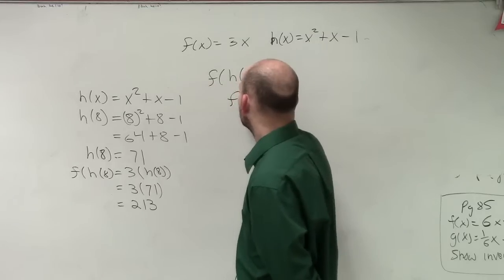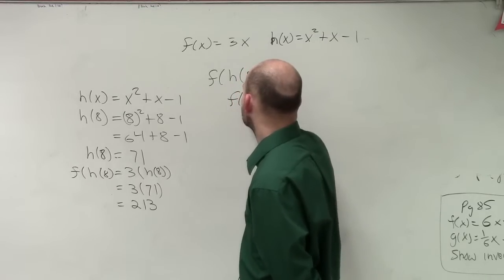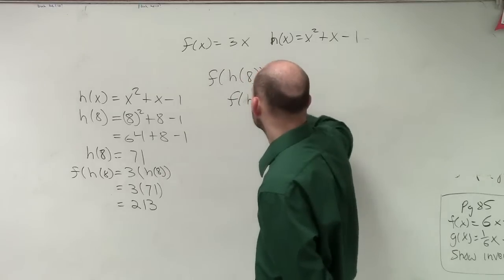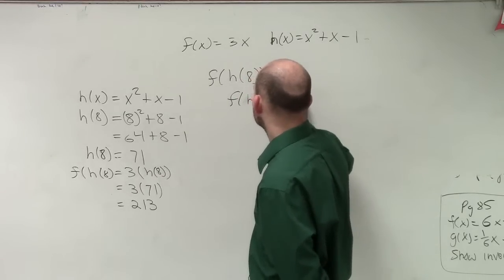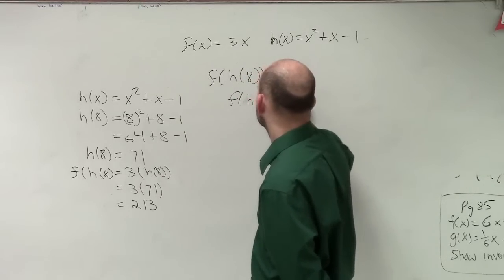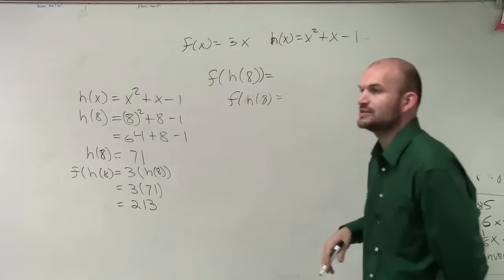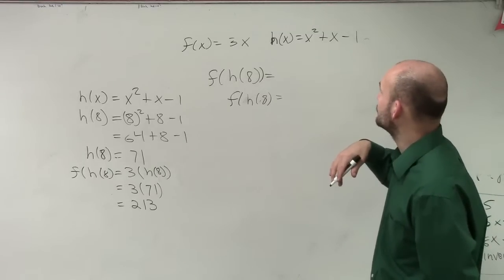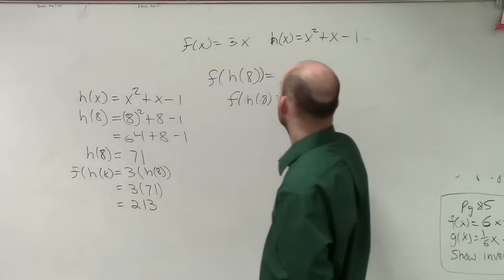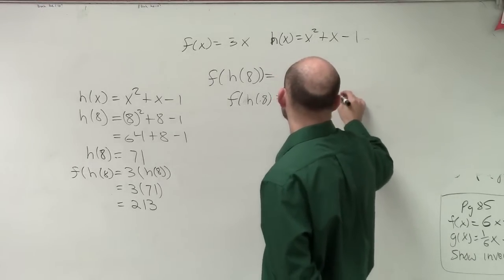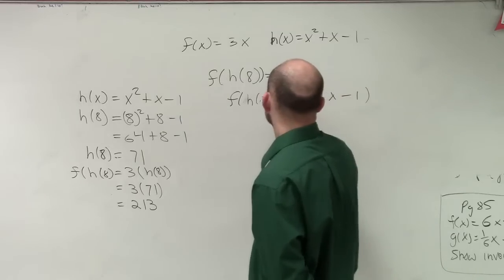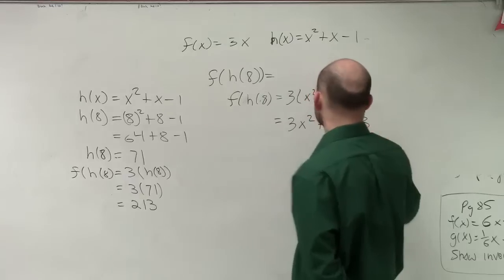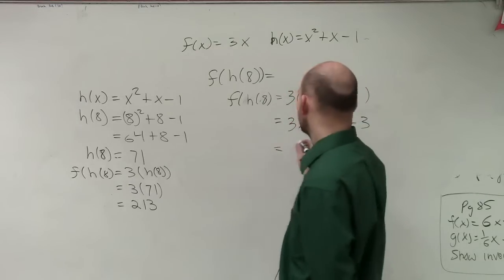So the other possible way that you guys could look at this is rather than figuring out what h of x is, just do h of x of 8. And what I'm going to do is I'm going to evaluate just for what h of x equals. Well, h of x is going to be 3 times x squared plus x minus 1, which equals 3x squared plus 3x minus 3.